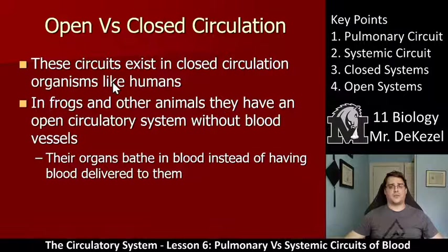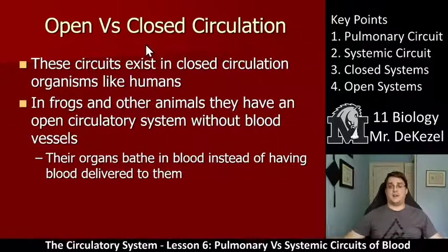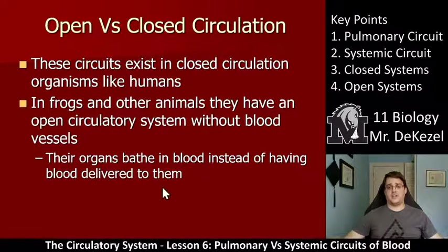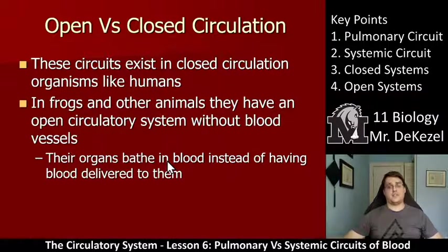These circuits only exist in closed circulation systems like humans, dogs, or cats, where blood vessels travel throughout the entire body. Not every animal or insect has a closed circulation — frogs and some other animals have an open circulatory system with no blood vessels, where organs bathe in blood instead of having blood delivered to them. They often breathe through their skin, oxygen passes directly into the blood, and while they still have a heart that mixes the blood, it is definitely not as efficient as our system.